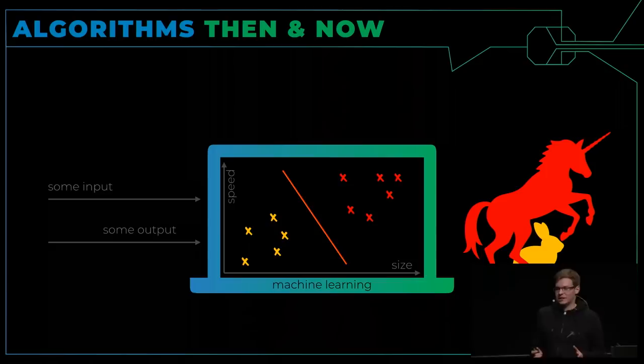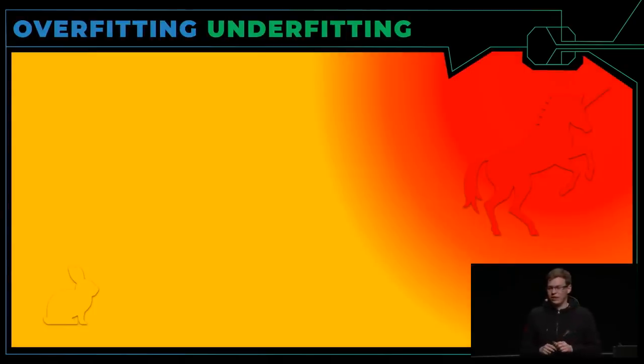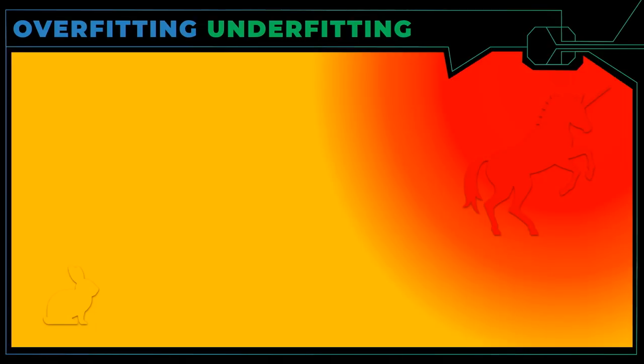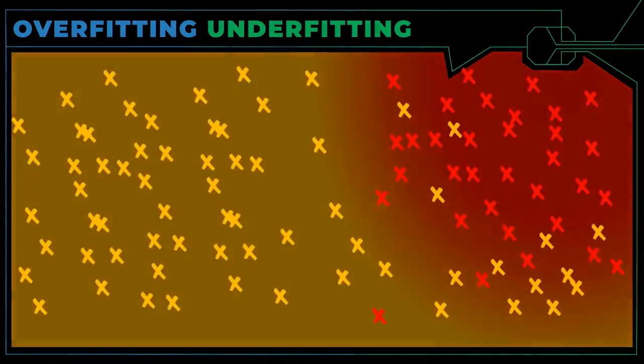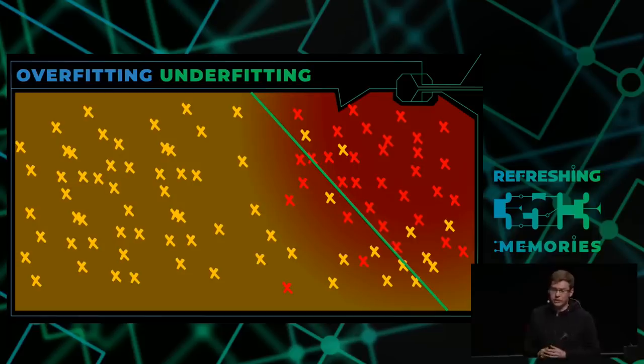Of course this is an overly simplified example. Real world applications have feature distributions which look much more like this, with a gradient where we don't have a perfect separation between those two classes. If we look at the line again, this will not be able to separate this training set well. We will have some unicorns which will be classified as rabbits, some rabbits which will be classified as unicorns. This is what we call under-fitting. Our model is just not able to express what we want it to learn.